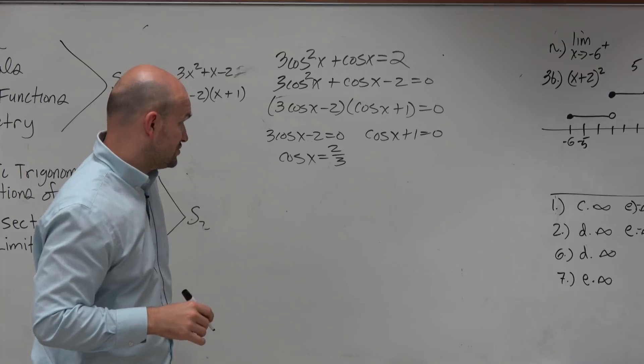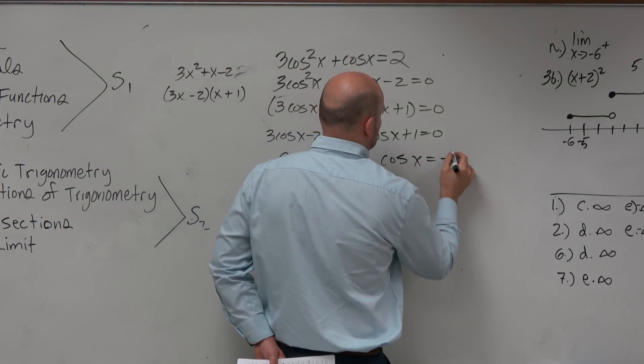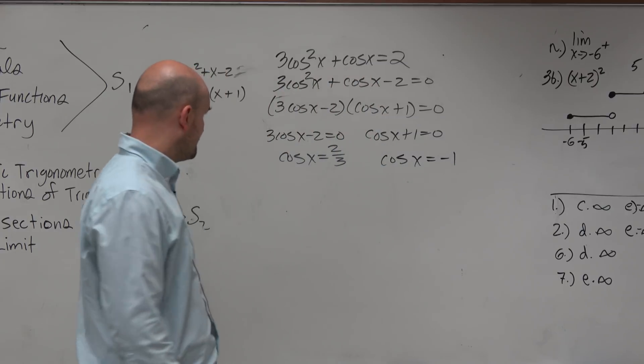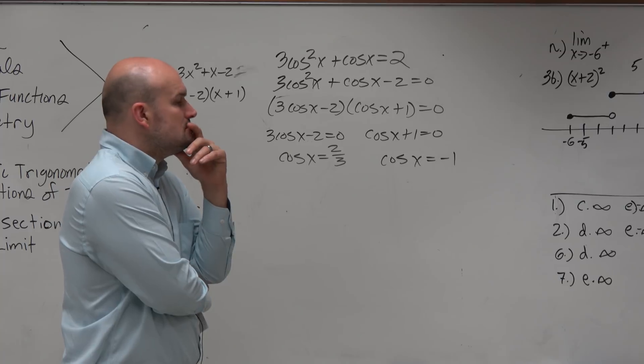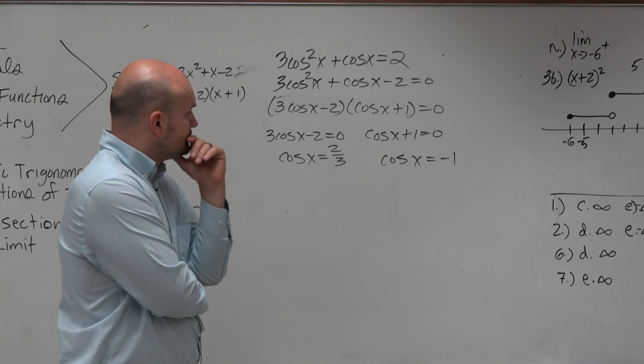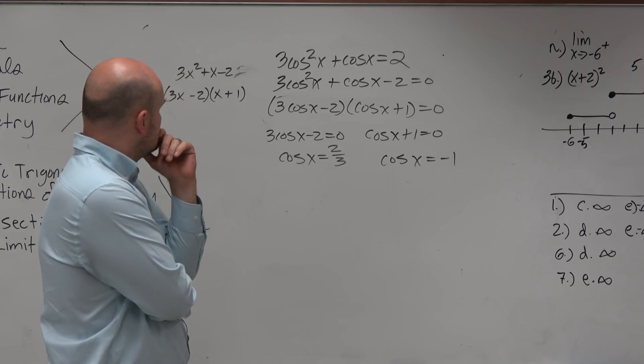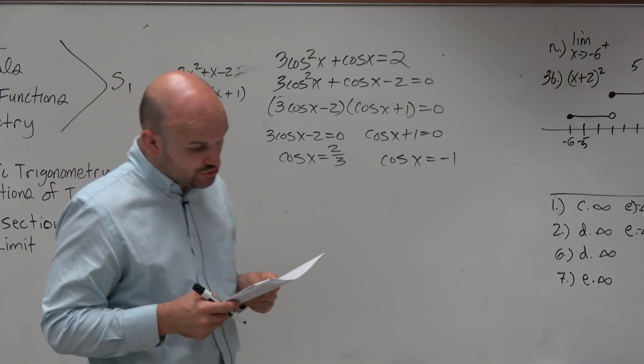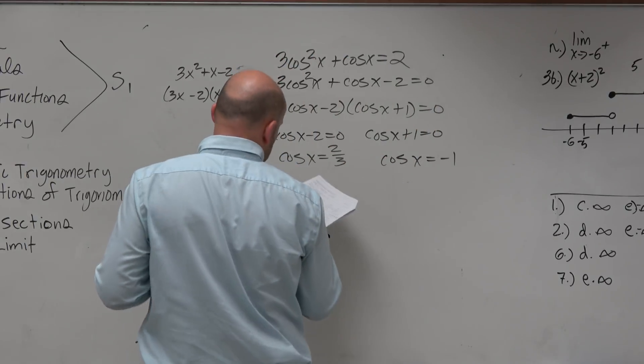Cosine of x equals 2 thirds and cosine of x equals negative 1. So that's kind of interesting.